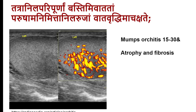The Vataja variety of Vruddhi — the swelling is soft in nature, the surface is rough (parusha), and it may produce acute pain.